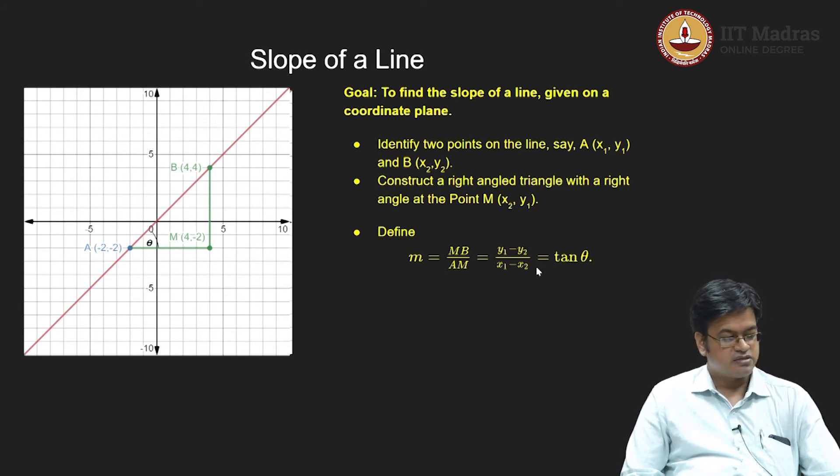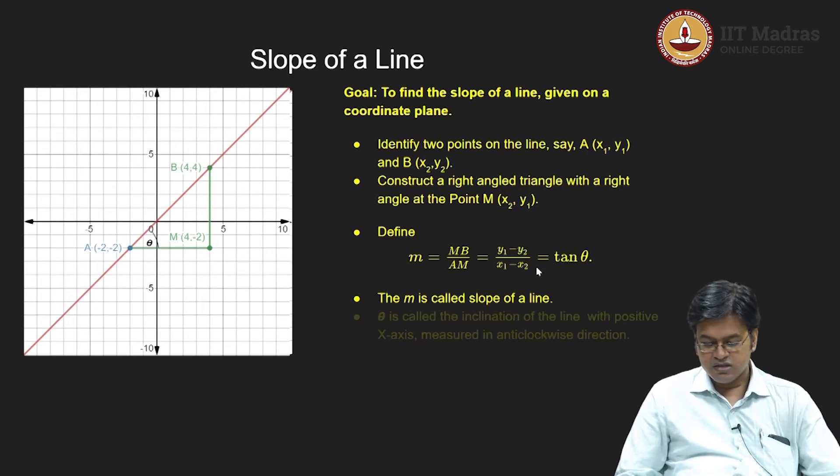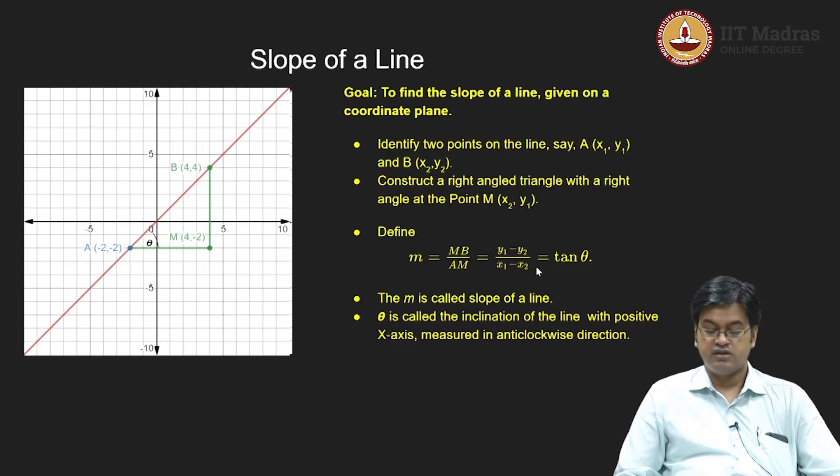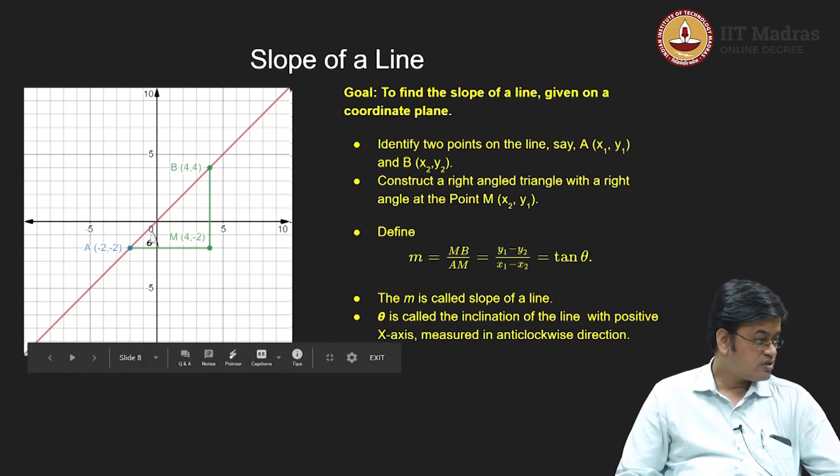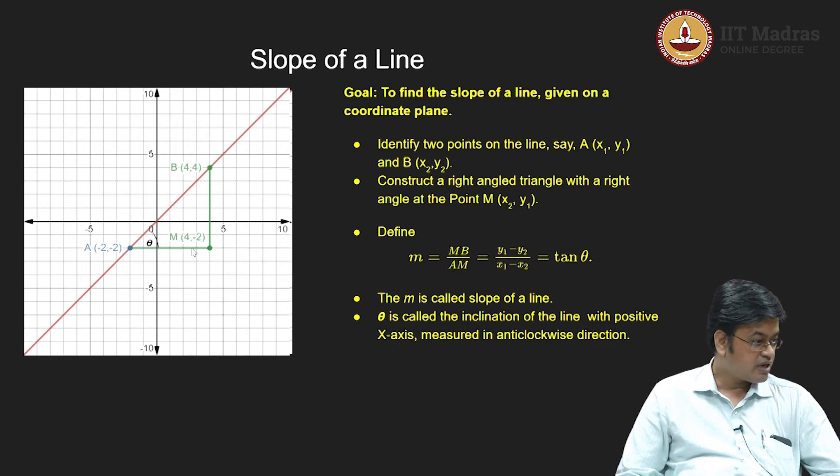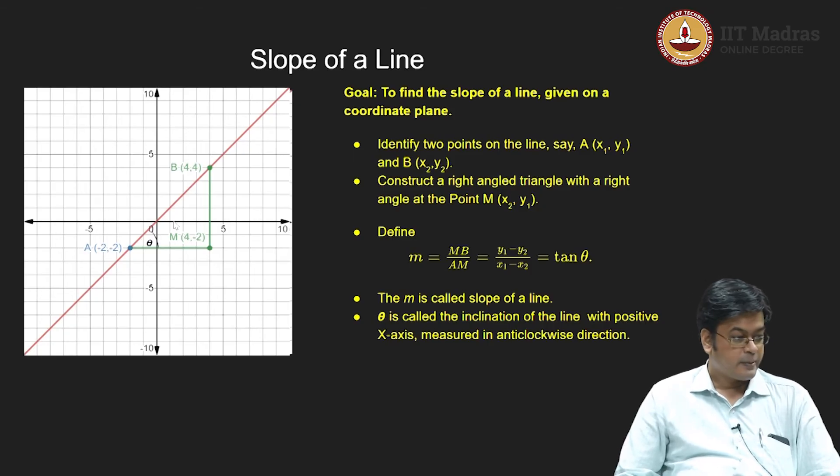So m is tan theta. Now I have introduced two terminologies here, m and theta. So let us define them properly. This m is called slope of a line which is what we are discussing, and then this theta is called inclination of a line with respect to positive x axis measured in an anticlockwise direction. Now somebody may say I have drawn this angle over here, but if you look at this particular line, this line is parallel to x axis and this line is intersecting x axis here. That means even if I consider this angle, this angle also will be theta from the basics of geometry.